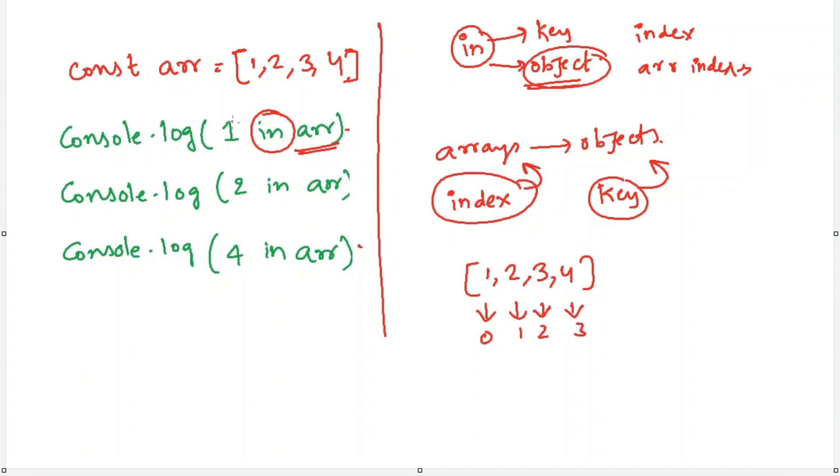So in our question, we are checking whether this first index, that is 1, is present in this indices or not. It is there. So it will return true.